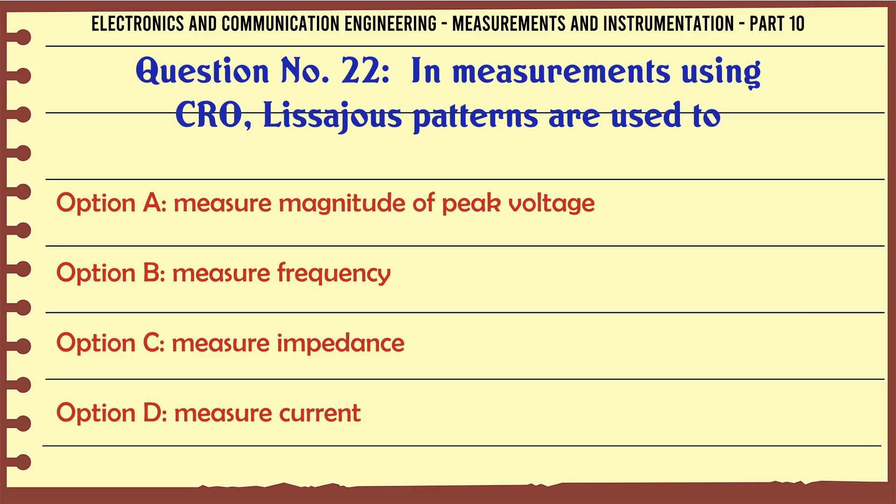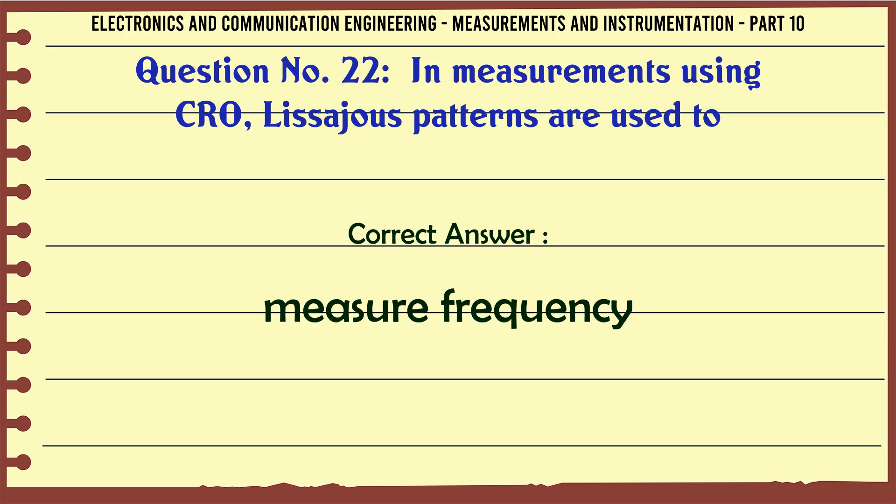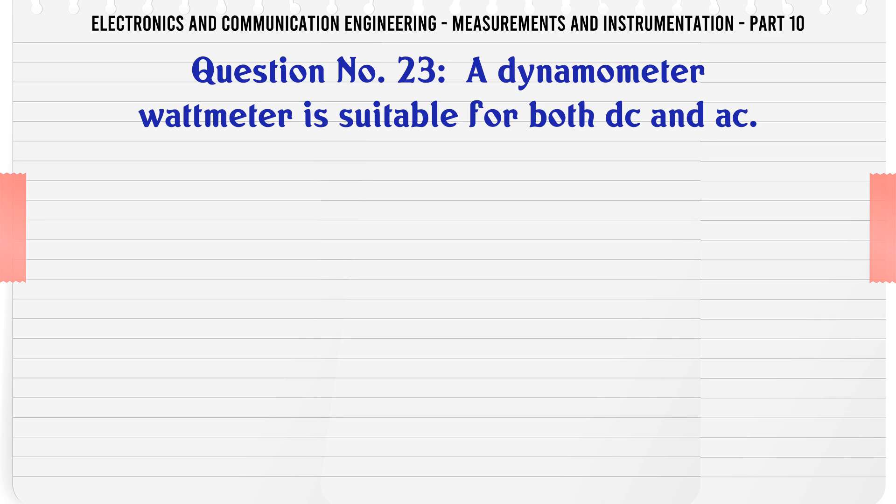In measurements using CRO, Lissajous patterns are used to: A) measure magnitude of peak voltage, B) measure frequency, C) measure impedance, D) measure current. The correct answer is measure frequency.